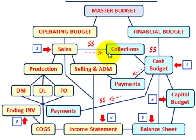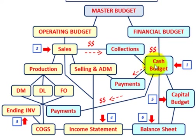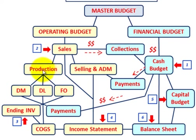The balance sheet is the last budget and it depends on all the other budgets under the master budget. The cash budget has those movements of cash — budgeted revenues being collected from our sales budget are going into the cash budget, and the cash budget also has payments going to selling and administrative support, and cash payments being made to all those production operations. So there's this interaction between our financial budget and our operating budget.